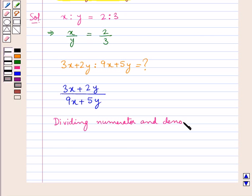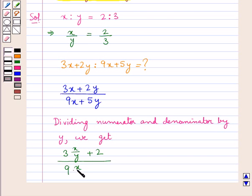by y, we get 3 into x upon y plus 2 upon 9 into x upon y plus 5.